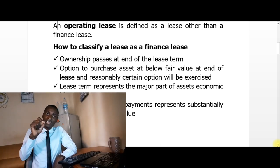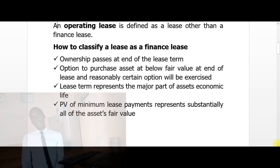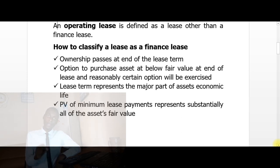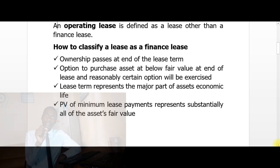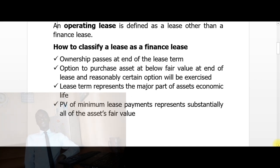Indicator number three: the lease term represents the major part of the asset's economic life, meaning the lessee is going to use the asset almost to the end of its useful life. For example, if the asset has a useful life of five years and the lease term is also five years, that is an indicator of a finance lease.